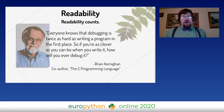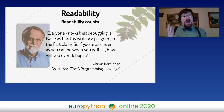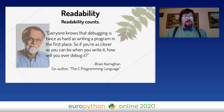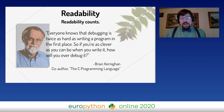Brian Kernighan, the co-author of the C programming language, said: everyone knows that debugging is twice as hard as writing a program in the first place. So if you're as clever as you can be when you write it, how will you ever debug it? I would add: if you can't debug it, how is your successor supposed to?